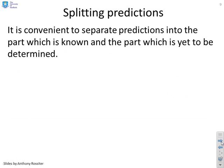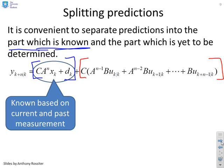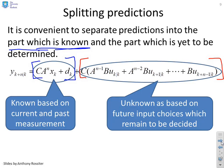Next, what we want to do is separate the predictions into the part which is known, so that's based on past or measured data, and the part which is yet to be determined, which will be based on the future inputs you haven't decided yet. That's relatively straightforward. If you look at this expression here for the n-step-ahead prediction of y, you'll see the bit I've just marked in blue is based upon known or measured data, and the bit I've just put red brackets around is based on the future inputs that you have yet to decide. So we have a known bit based on current and past measurement, and we have an unknown bit which is based on future input choices which remain to be decided.